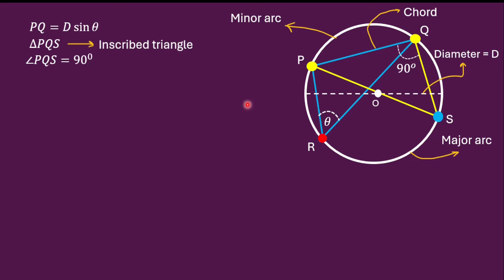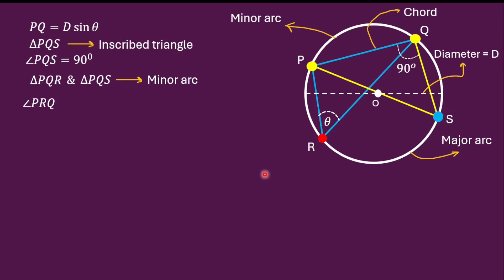Furthermore, triangles PQR and PQS both subtend the same arc, and therefore the angle at R is congruent to the angle at S. That is, the angle at R equals the angle at S, and both are equal to theta. So I can write the angle at S as theta.